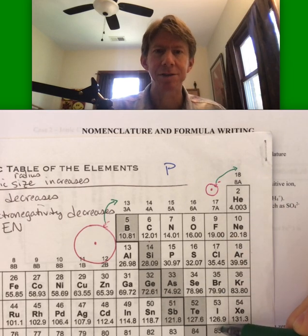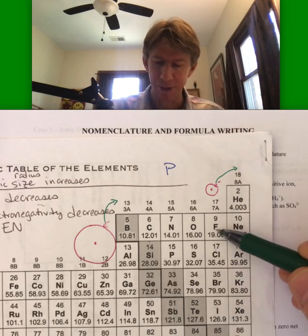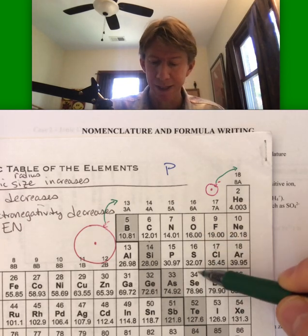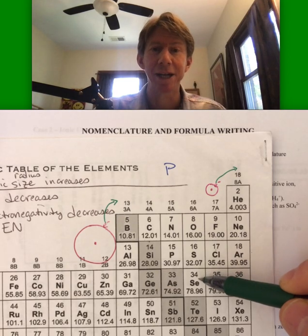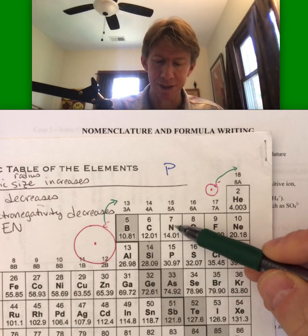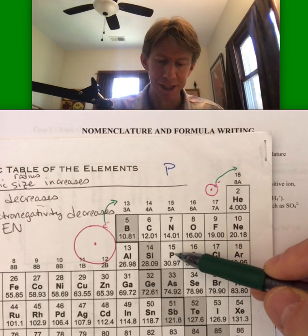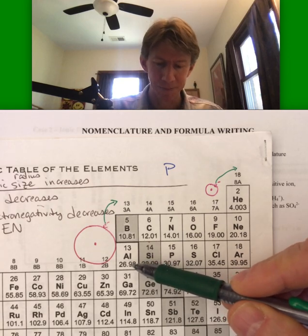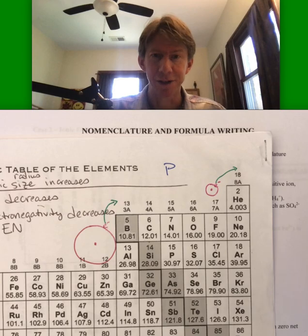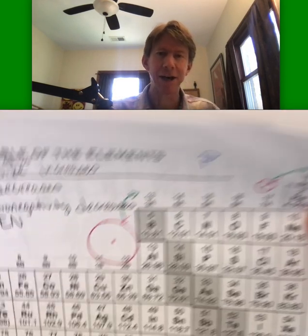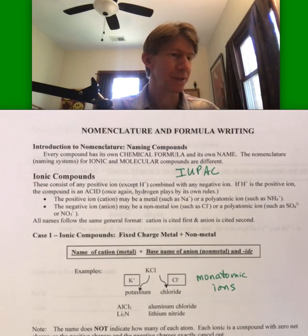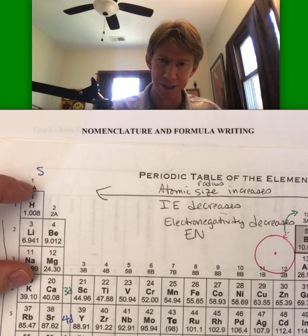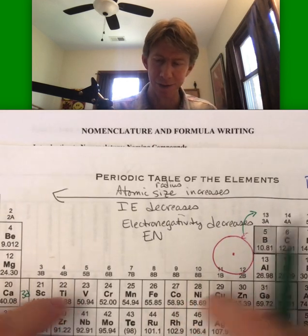The noble gases form no ions. The halogens form minus one ions — so F minus, Cl minus. Oxygen, sulfur, and selenium form two-minus ions when they form ions. Nitrogen and phosphorus form negative three. And aluminum forms a plus three. The other ones we don't have to know. That's how having a periodic table helps you know the charges of what are called the representative elements or main group elements — the taller ones on the periodic table, not the transition metals.